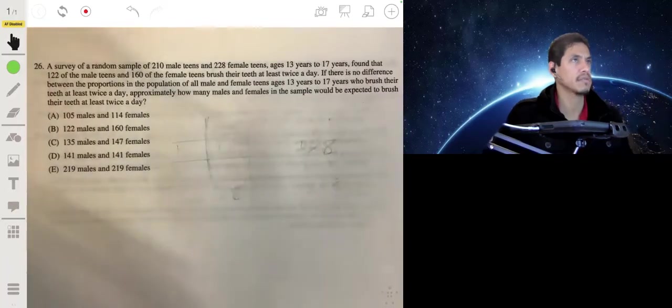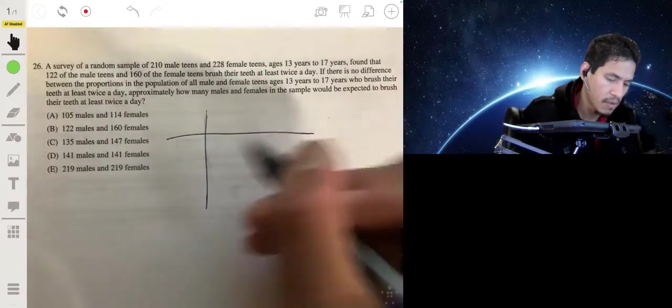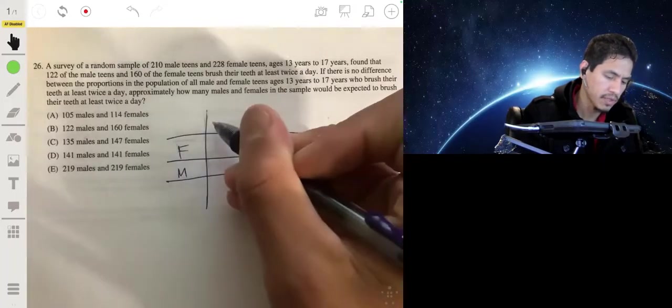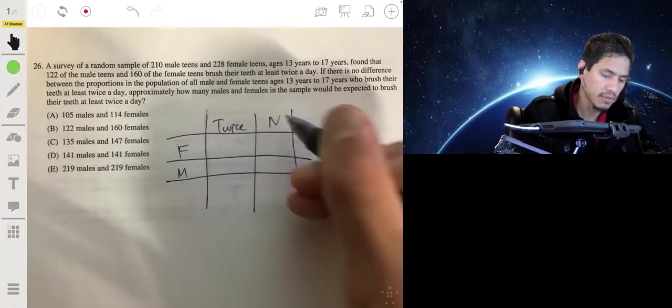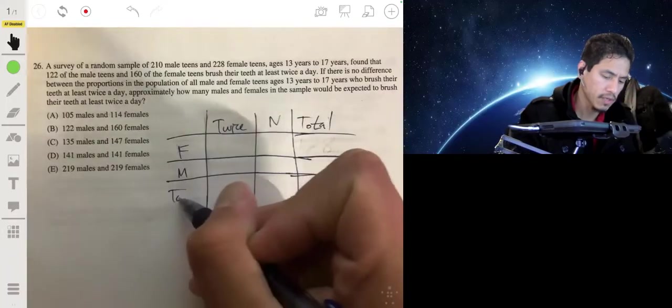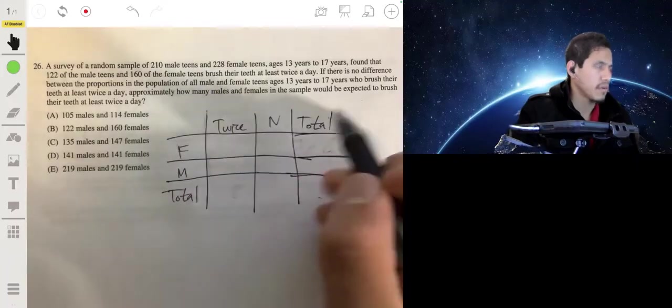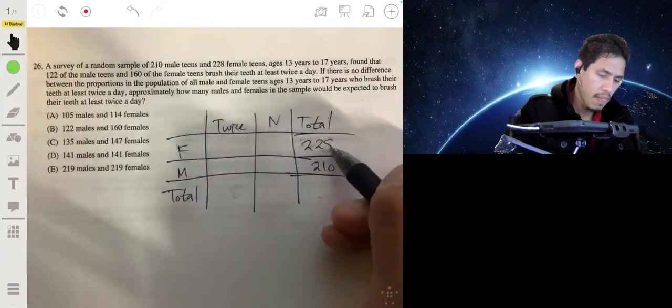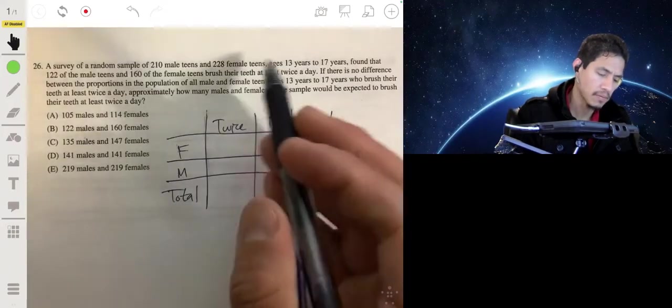Let's make a table so we can see what's going on here. So we'll have female, male, and we'll say twice a day over here, and we'll just say not twice, and we'll have our total and our total across like that. We have 210 total males, 228 total females, that means we have 438 total teens.